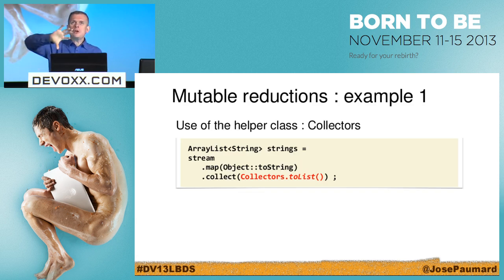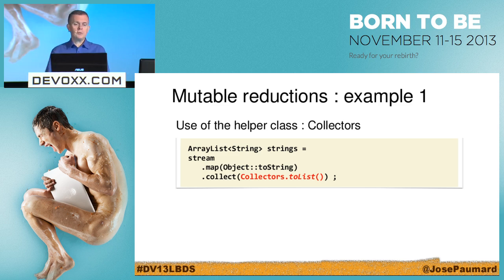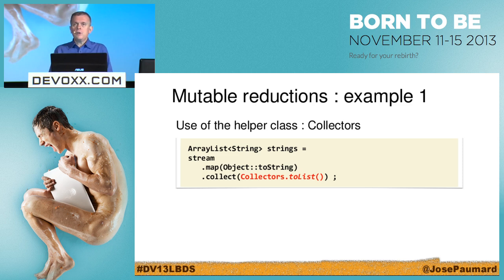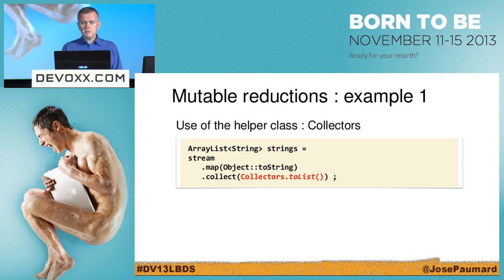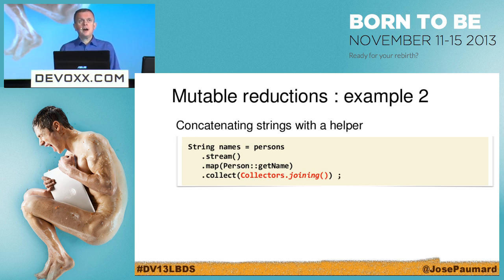Mutable reduction — the second kind, about accumulating repackaged objects into some kind of structure like a collection or StringBuilder. We already wrote such a pattern: mapping objects to String with stream.map(Object::toString).collect(Collectors.toList()). Even if I don't know anything about the Collectors class, when I read this code it's very straightforward. I can also concatenate strings: stream.map(Person::getName).collect(Collectors.joining()) — the joining() method on the Collectors class will concatenate all the strings together.